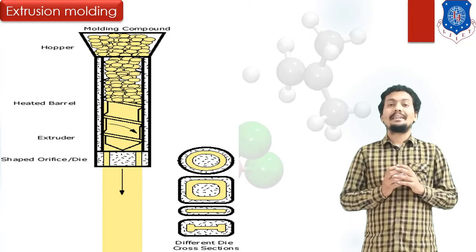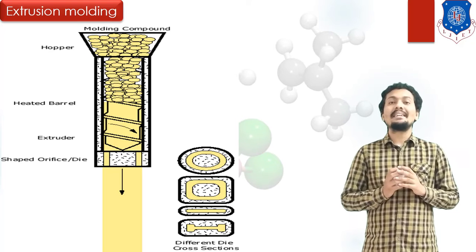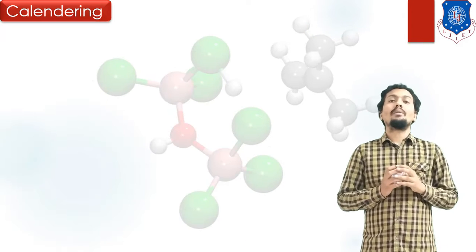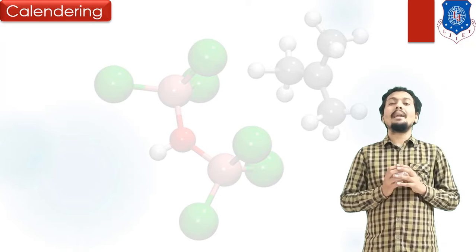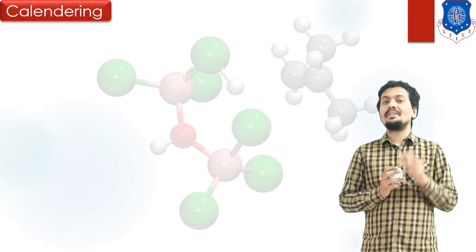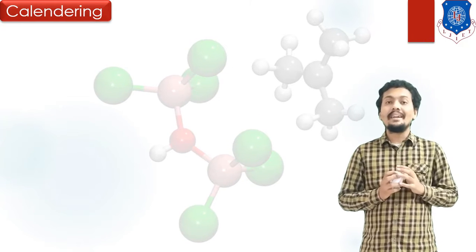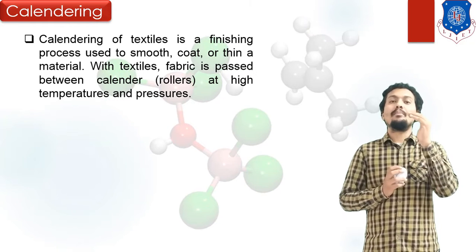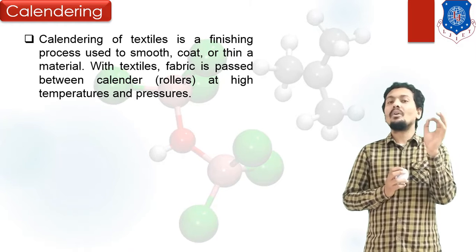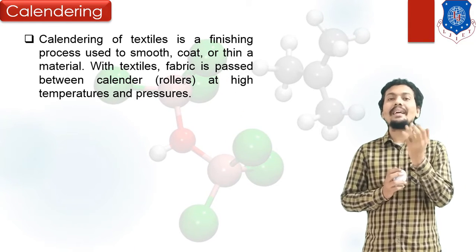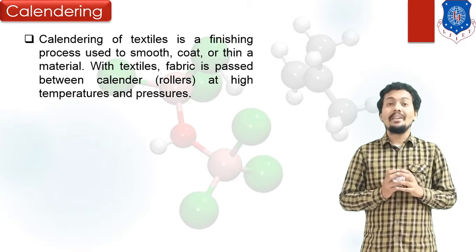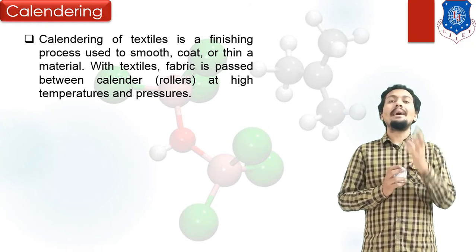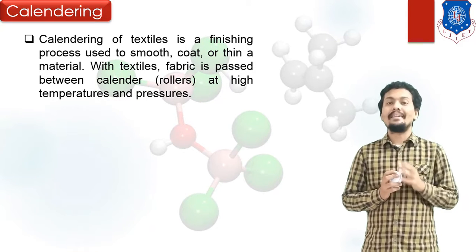After Extrusion Molding, here is the Calendering process. In Calendering, material is passed through rollers and we can apply geometry or impressions on fabric or material. This process is very important for textile industries — for example, on some fabric, you can make different shapes or impressions using this Calendering process.